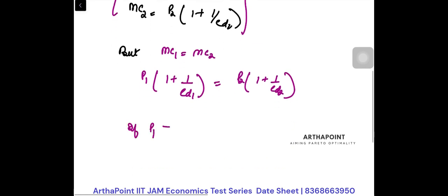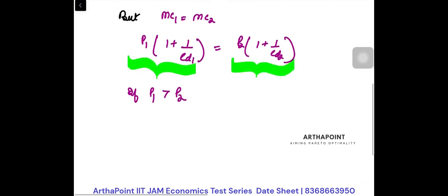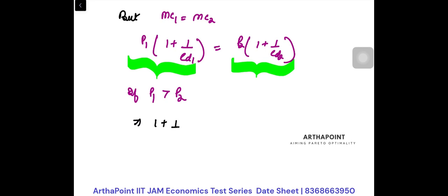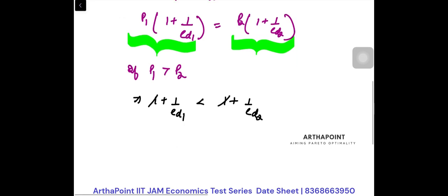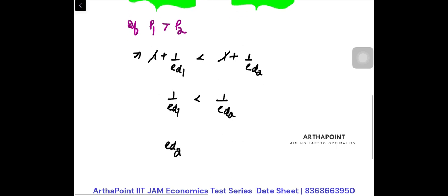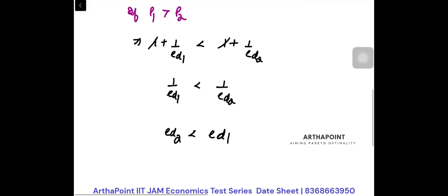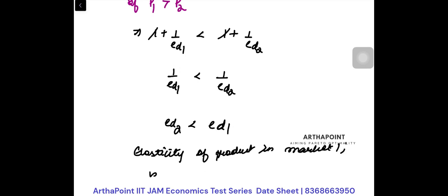Now if P1 is greater than P2, and the product of these must be equal, this implies that (1 plus 1/ED1) should be less than (1 plus 1/ED2). So 1/ED1 should be less than 1/ED2, meaning ED2 should be less than ED1 — the elasticity of demand in market 1 is more than in market 2.